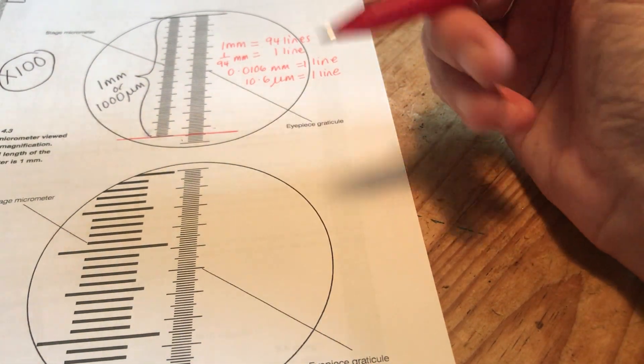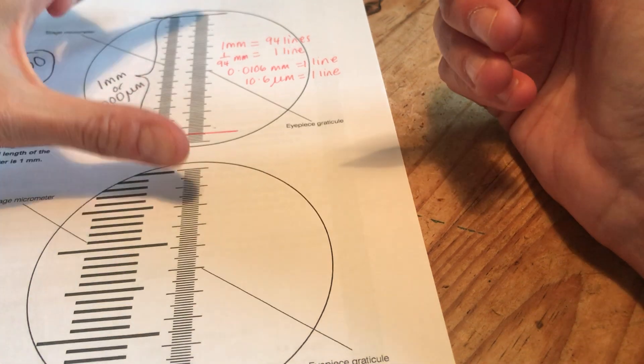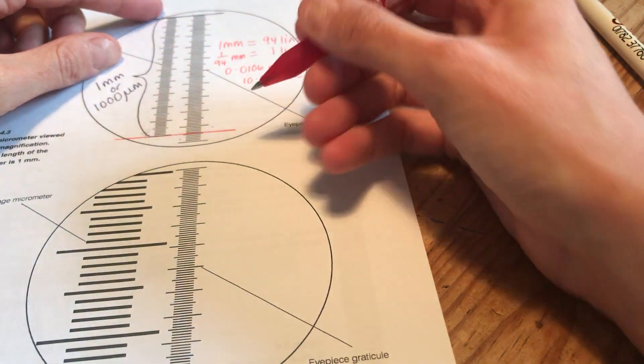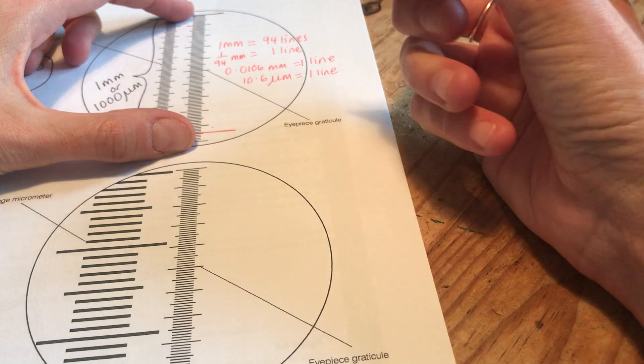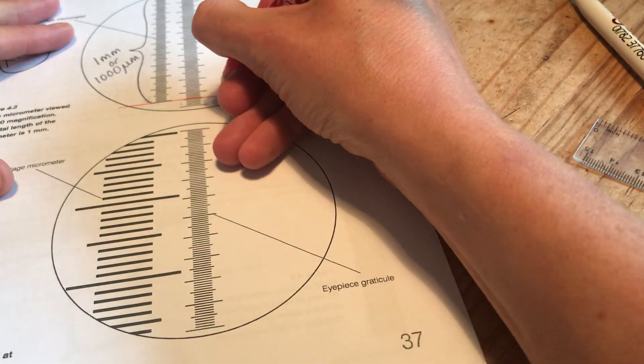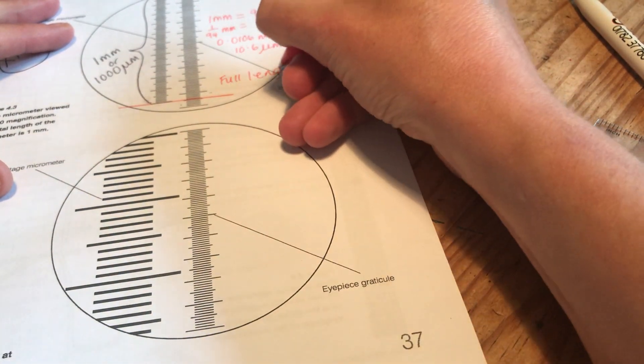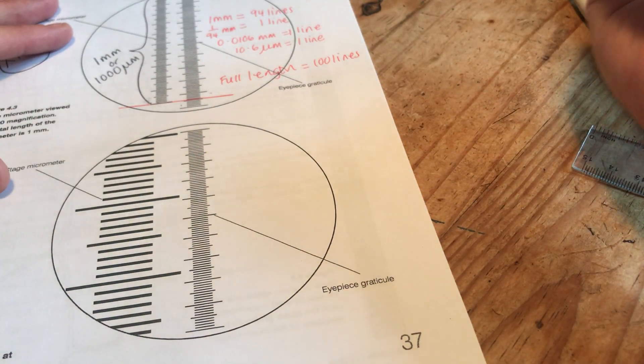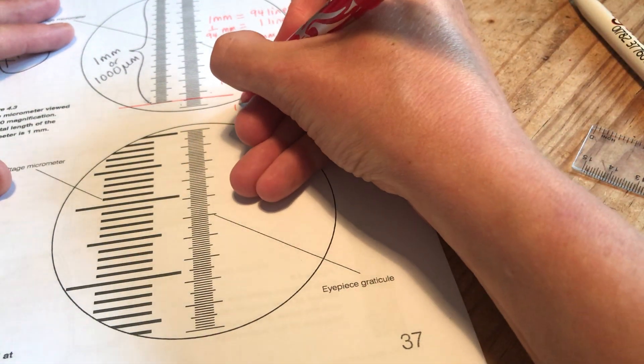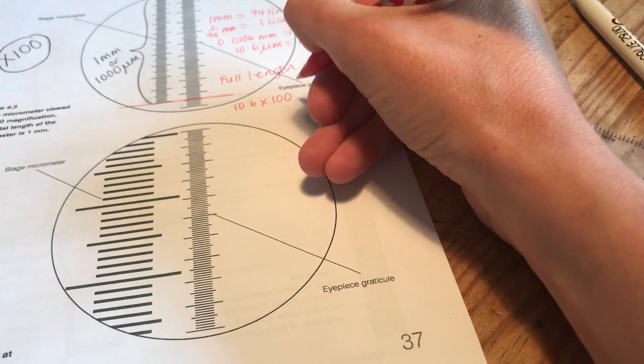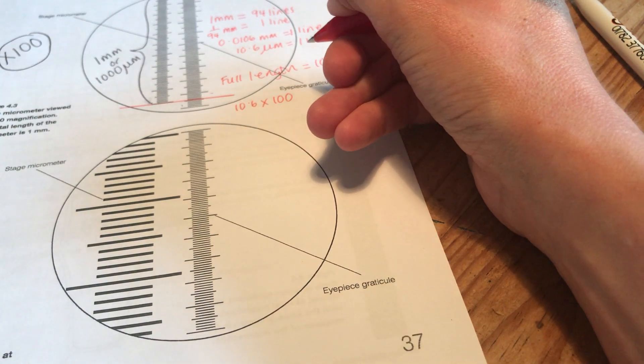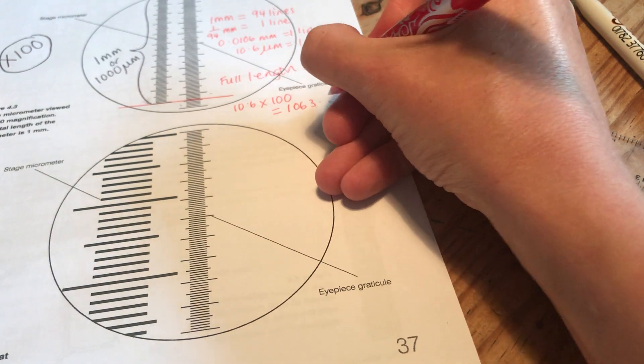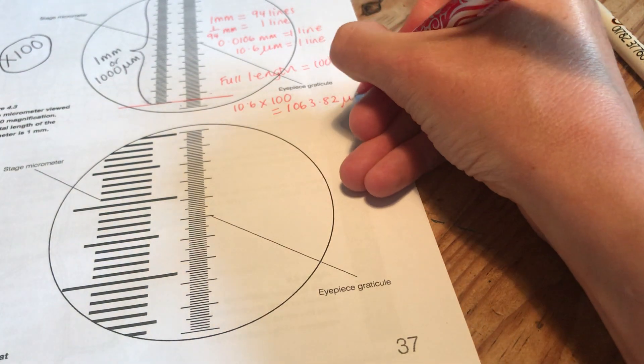Then it says now calculate the true length represented by the whole of the eyepiece graticule. Well the whole of that graticule there is not just 94 lines there's 100 little lines in there. So the full length is 100 lines. Each line is worth 10.6 micrometers. So 10.6 times 100 will give me the answer of 1063.82 micrometers.